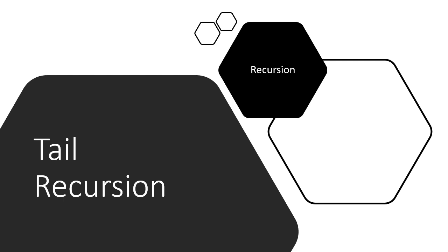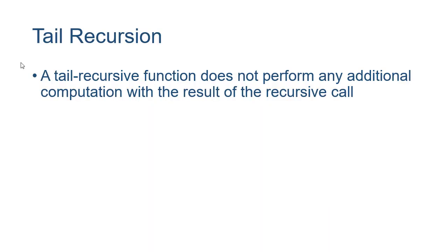An important concept when studying recursion is the idea of tail recursion. With tail recursion, our method is not going to perform any additional computation after the recursive call completes. Essentially, we're going to bring the result with us forward through the recursive calls.